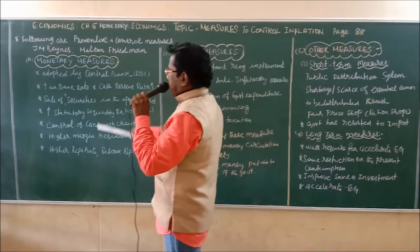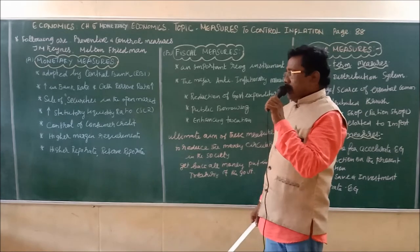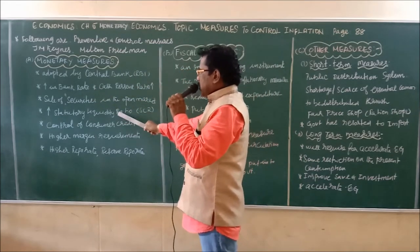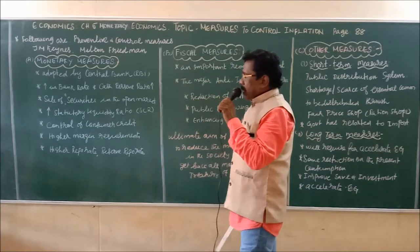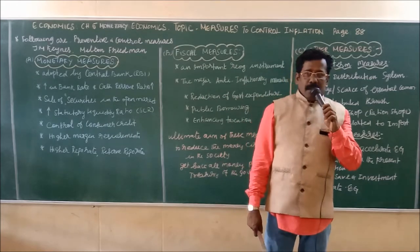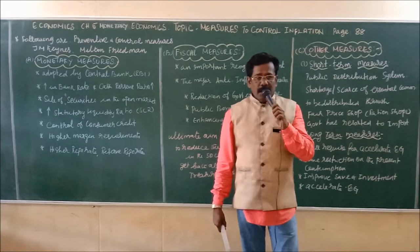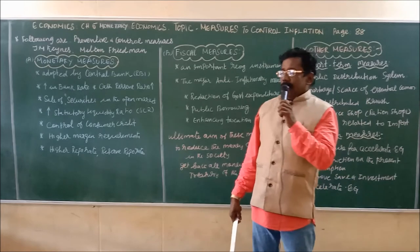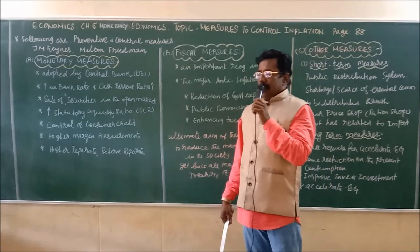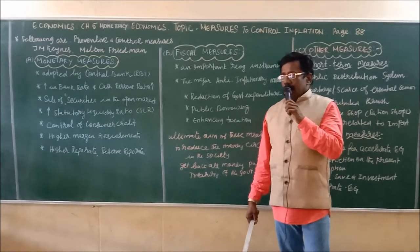Bank rate is nothing but the rate of interest charged by bankers for giving of loans and advances. Regarding the sale of government securities in the open market: by way of selling government securities in the open market, the money available in circulation in society is collected back by the government. That is, by selling securities, the government gets back the excess money circulating in society.